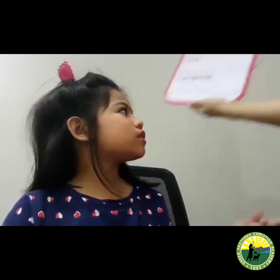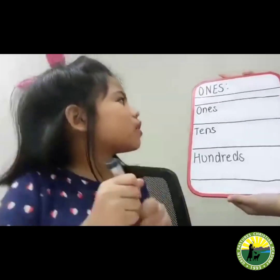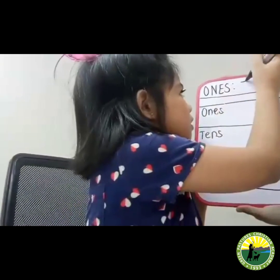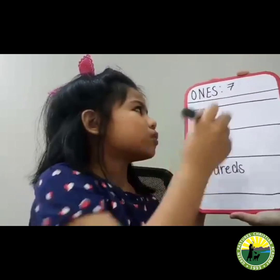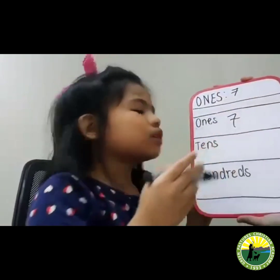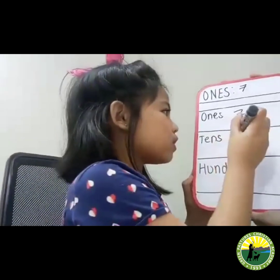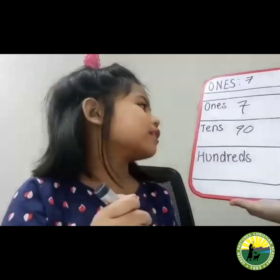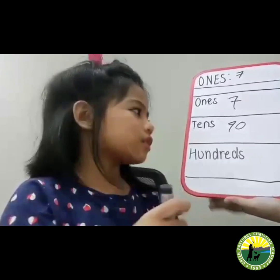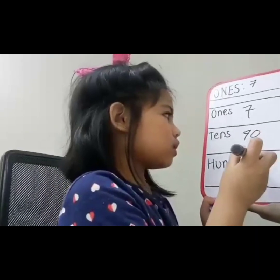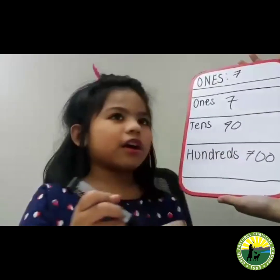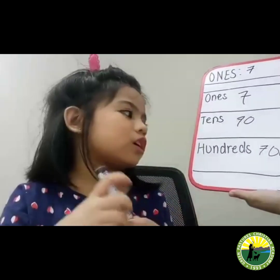For place values in ones, here is an example. Let's think of the number 7. So the ones place will be 7 because the digit is only 1 digit. In the tens place, 7 will be 70 because it has 2 digits. In the hundreds place, 7 will be 700 because it has 3 digits.